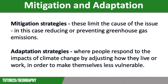We can try to reduce the impact of global climate change in two ways: by mitigation or by adaptation. Mitigation strategies limit the cause of the issue — in this case they reduce or prevent greenhouse gas emissions and protect valuable carbon sinks. These strategies can be on a local or global scale, for example investment into renewable energies.